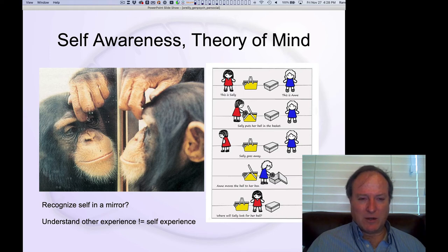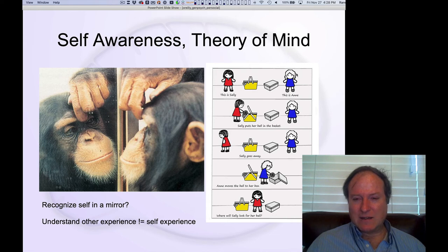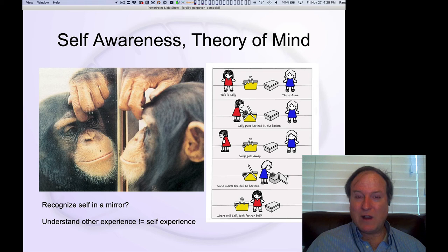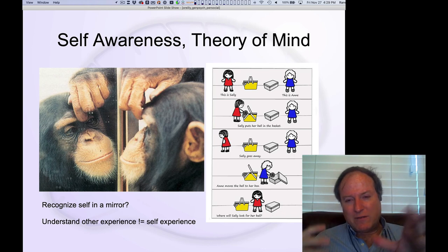There are objective tests of self-awareness — ways to assess to what extent people and other animals have some sense of self. One is putting a spot on somebody's forehead and sitting them in front of a mirror: if they start trying to figure out what's going on with the splotch, you know they have a sense that that's themselves in the mirror. Then there's the theory of mind test — the classic Sally-Anne task — where one character, Sally, goes away while the ball is moved from its original box into her own box.